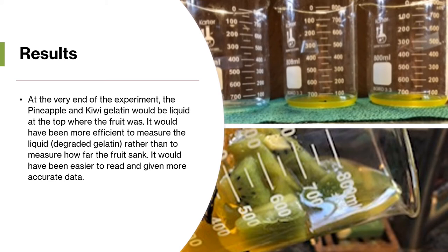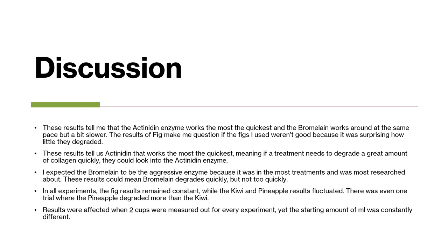When I poured out the first trial to dispose of it, I could tell how one beaker poured out more easily than another because it was more liquefied. I measured this at the end of every experiment to see how much gelatin was degraded in liquid form. These results showed that the actinidin enzyme, found in kiwi, worked the most and the quickest, while the bromelain enzyme, found in pineapple, worked at a similar but slightly slower pace. The fig results made me question whether the figs I used were suitable for this experiment.